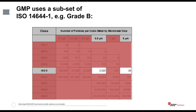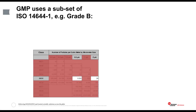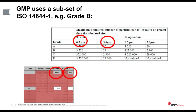GMP has decided that the particle sizes of interest are 0.5 and 5 microns. You can see from Grade B at rest in the European GMP that the number of particles matches ISO class 5 — those numbers are directly lifted from the ISO. However, the 2015 version of the ISO standard no longer specifies the number of particles at 5 microns for ISO class 5. Users who are regulated and complying with GMP rules still have to measure 5 microns, because it is mentioned in GMP regardless of the ISO standard.